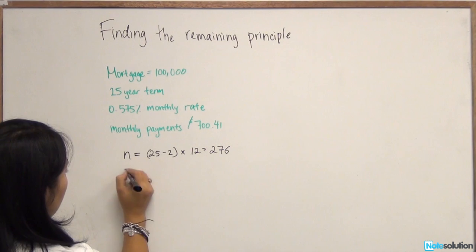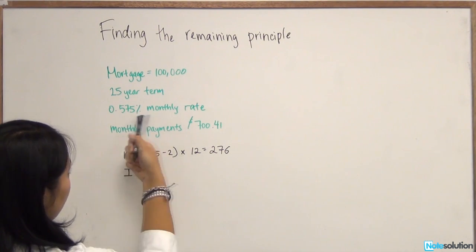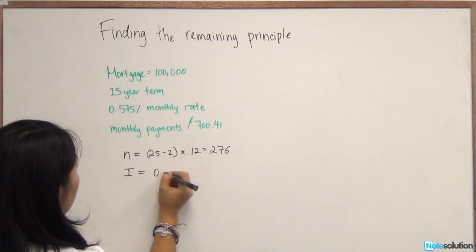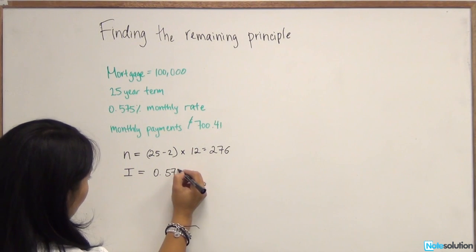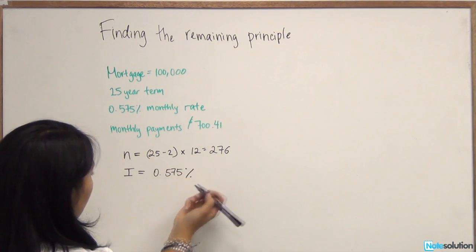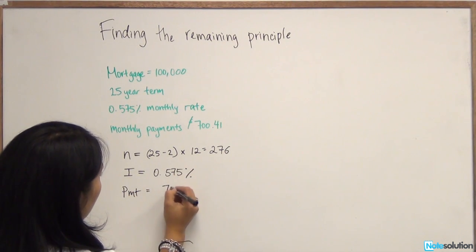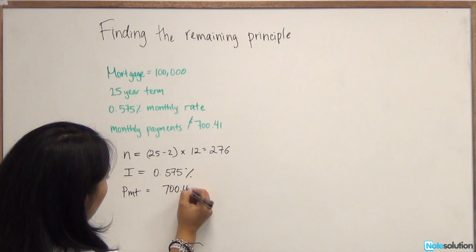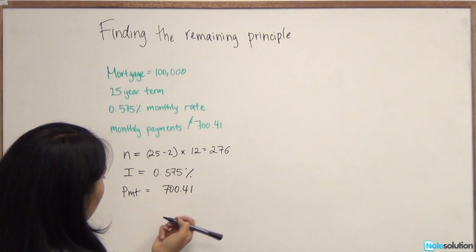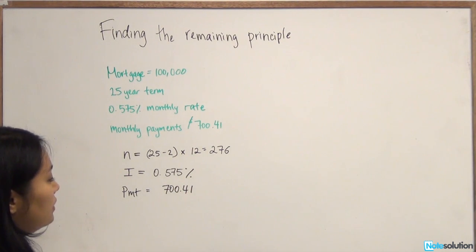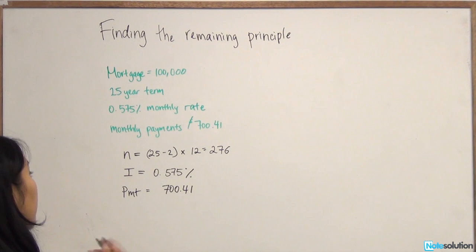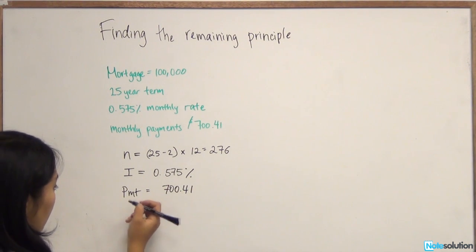Next, our input is the interest and that's already given to us, quite easy, 0.575%. And we have payments equal to $740.41. That's also something that's already given to us. Given all of these terms, we can easily calculate the present value, which is the principal of the mortgage remaining.